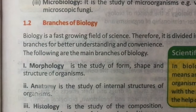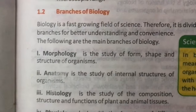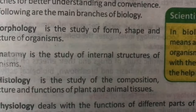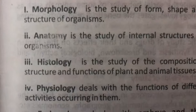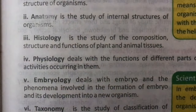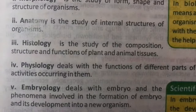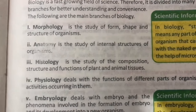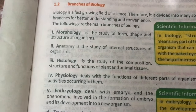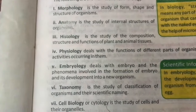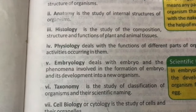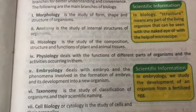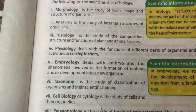Morphology is the study of form, shape, and structure of organisms. Anatomy is the study of internal structure of organisms. Histology is the study of the composition, structure, and functions of plants and animals' tissue. Physiology deals with the functions of different parts of organisms and the activities occurring in them.